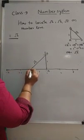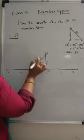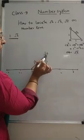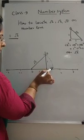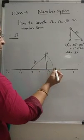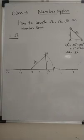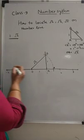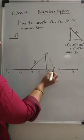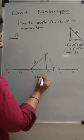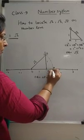Now take a compass with OB as the radius and O as the center, and draw an arc. Let this arc cut the number line at P. So P will be the point where root 2 is located. Because OB is the radius and OP is also the radius, the length of OP is equal to root 2. So root 2 lies here at P.